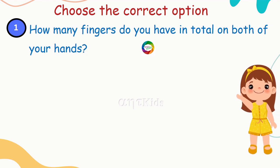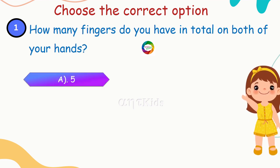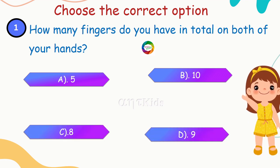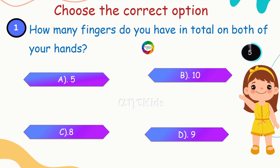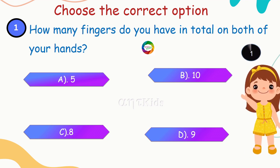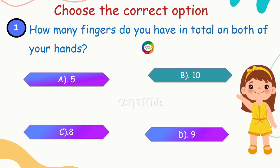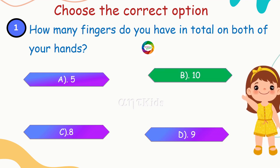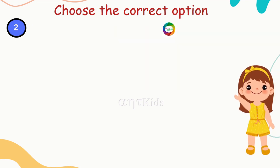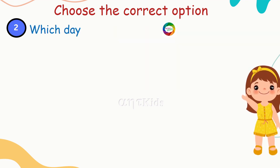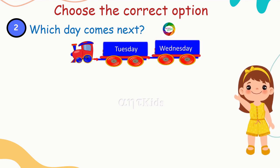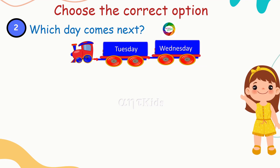First question: choose the correct option. How many fingers do you have in total on both of your hands? Options: A) 5, B) 10, C) 8, D) 9. Yes, 10 fingers you have on both of your hands.